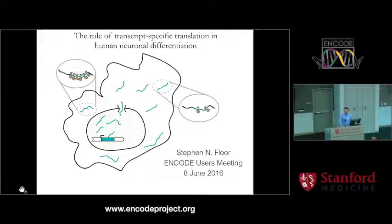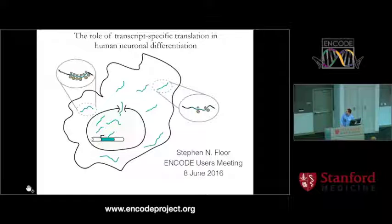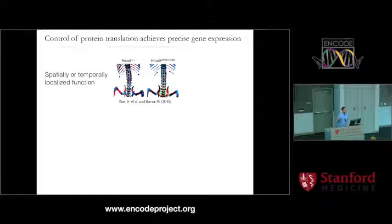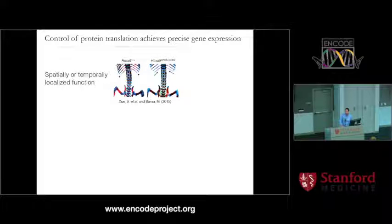I'm going to talk about a potentially heretical topic to this audience, which is post-transcriptional regulation at the level of translational control in my post-doctoral work with Jennifer Doudna at UC Berkeley. Control of protein translation broadly affects expression of genes in circumstances where cells need acute spatiotemporal control over regulation, such as this example from Maria Barnett's group, where deletion of a small RNA element causes mice to fail to develop their bottom rib.